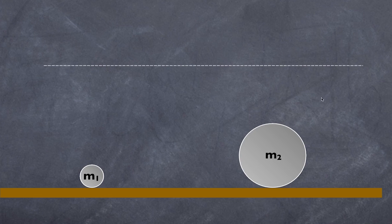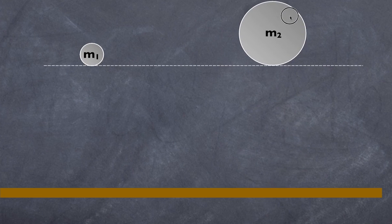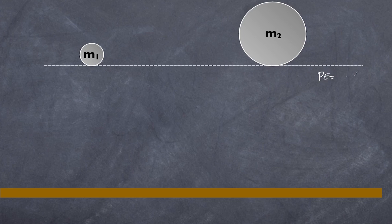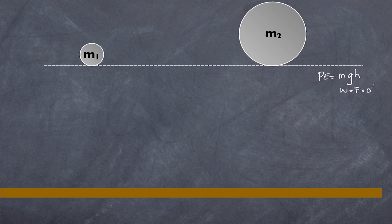I have here two masses, and I'm going to raise those masses to a certain height. As you can see, I've raised both masses by the same height. The question I ask is: which one has the greatest potential energy? You probably already assumed that the greater potential energy belongs to mass 2, because the potential energy of any object is simply its mass multiplied by the acceleration due to gravity times the height — or equivalently, the work done, which equals force multiplied by displacement.